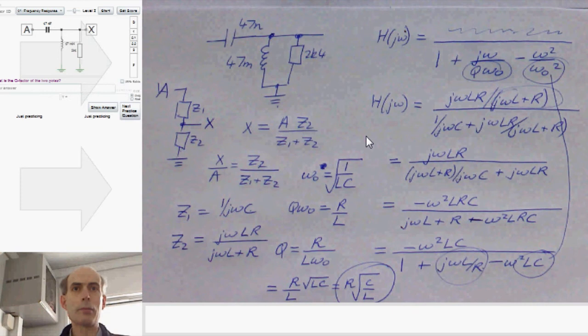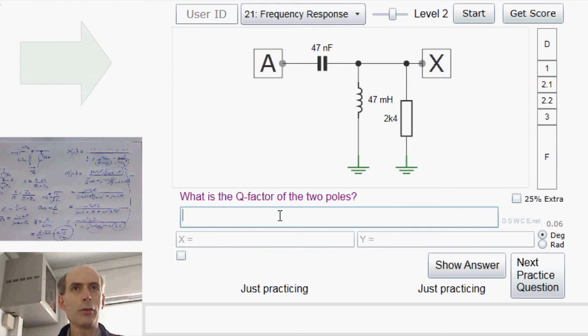Right, back to the question. What is the Q-factor of the two poles? It's the resistor, 2k4, multiplied by the square root of the capacitor, 47 nano, divided by the inductor, 47 milli.